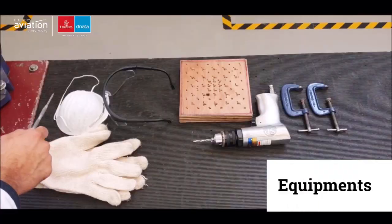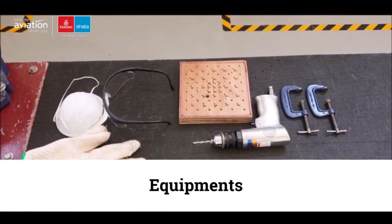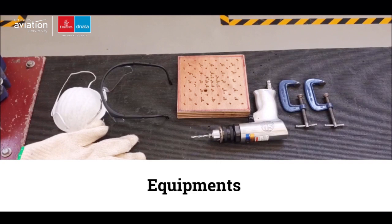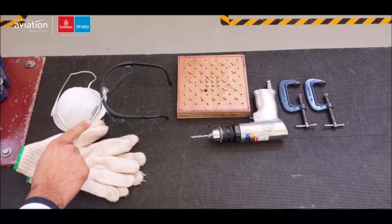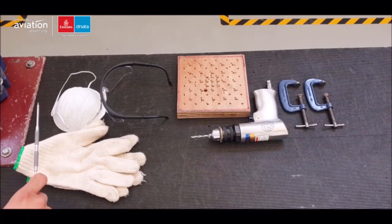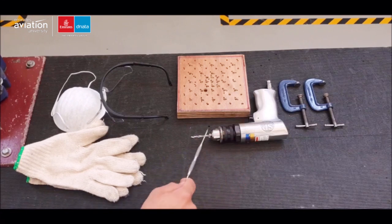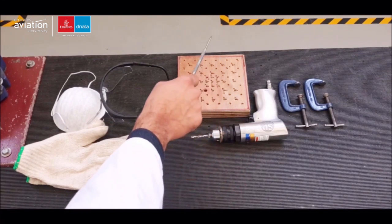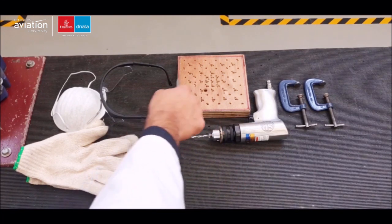Use your personal protective equipment which includes the dust mask, gloves, and finally goggles. Now for the tools, you have to use the pneumatic drill so you can drill out the piece, a wood block, and finally the C clamps.